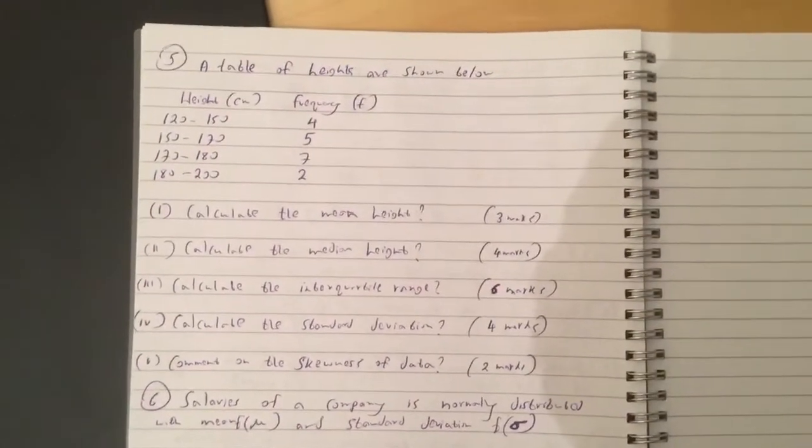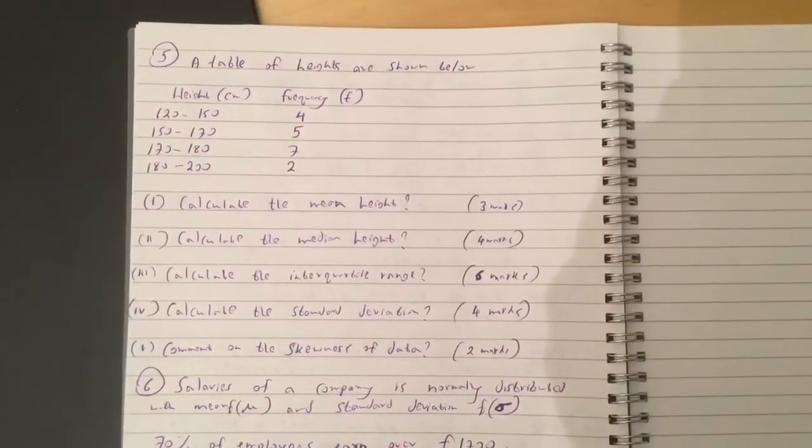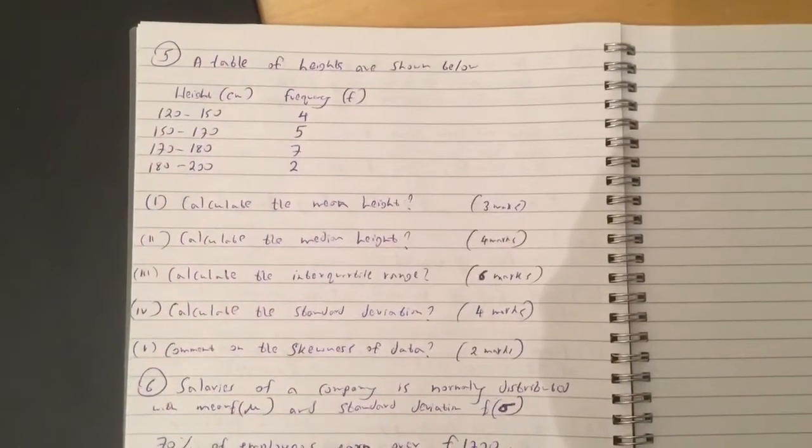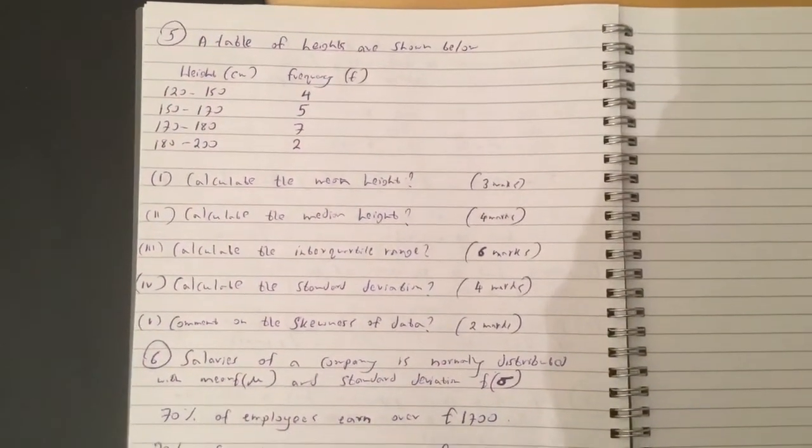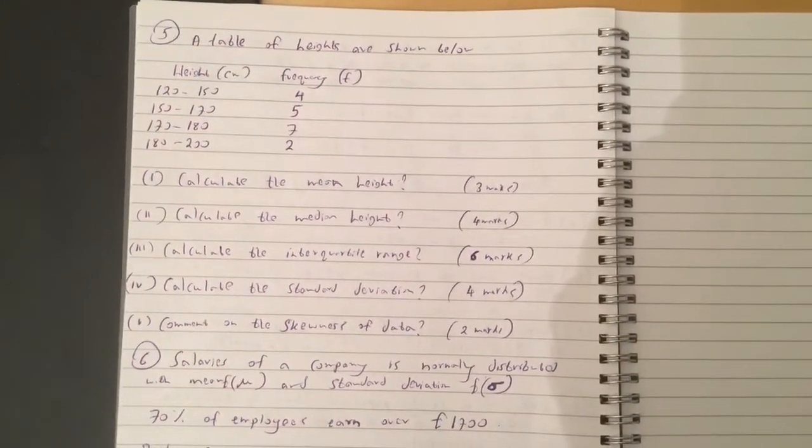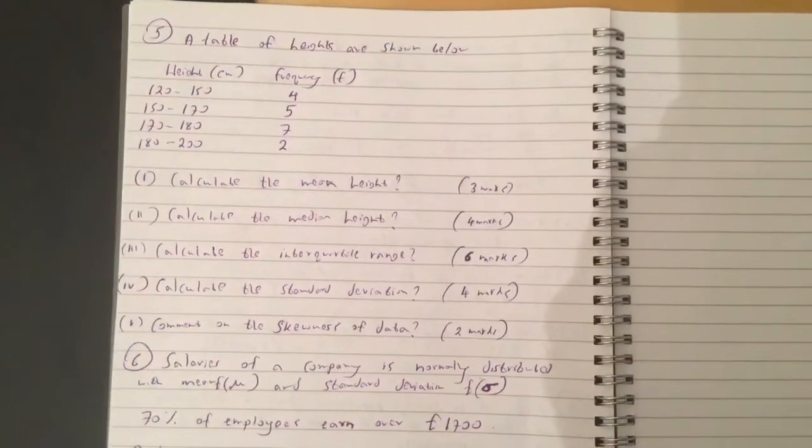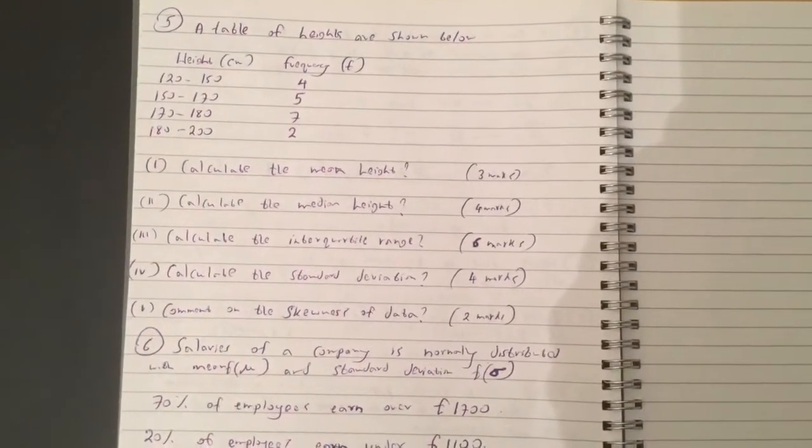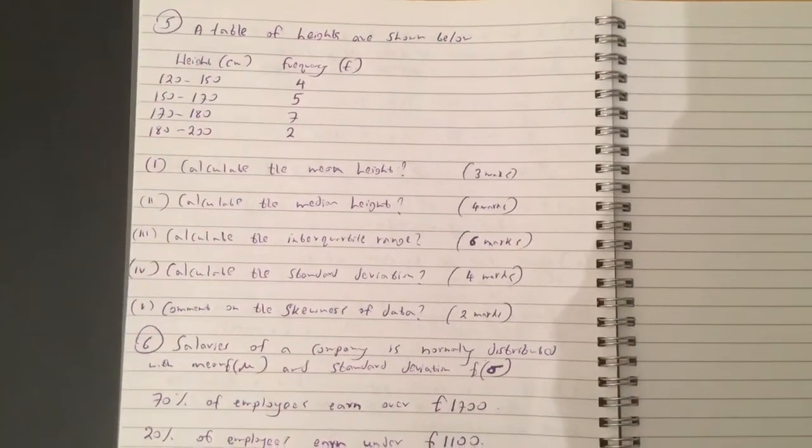A table of heights are shown below. Heights 120 to 150, frequency 4; 150 to 175; 170 to 187; and 180 to 202. Calculate the mean height, calculate the median height, calculate the interquartile range, calculate the standard deviation, comment on the skewness of data.